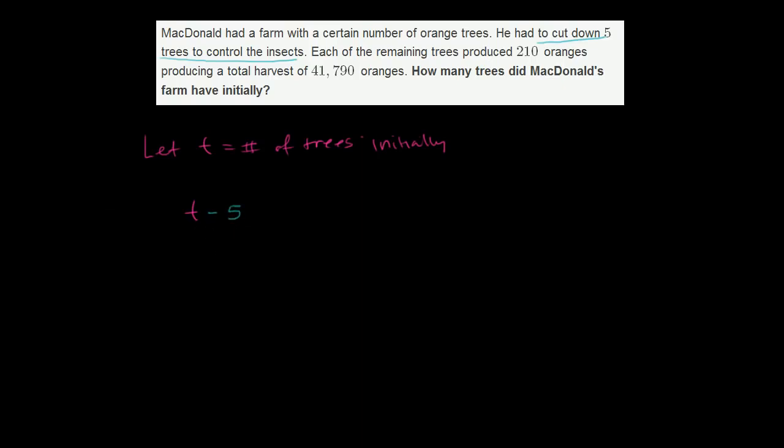Now, they tell us that each of the remaining trees, and we know there are t minus five remaining trees, produced 210 oranges. So each of these t minus five trees are going to produce 210 oranges. So this is the number of oranges the t minus five trees are going to produce. This is the number of trees times the oranges per tree.